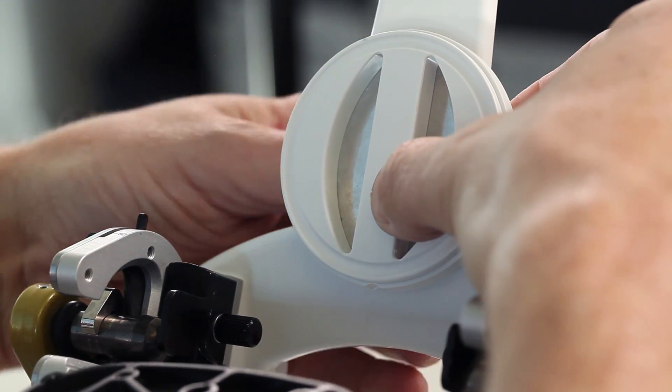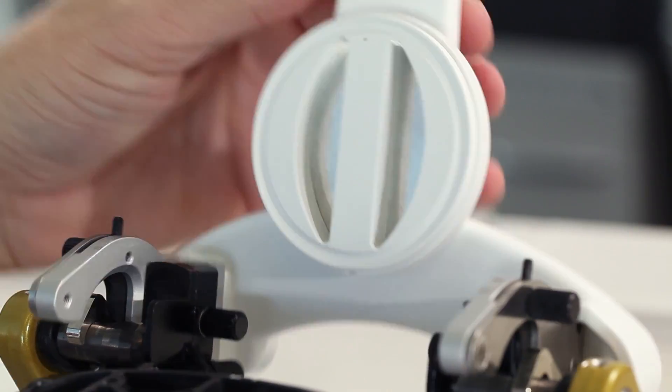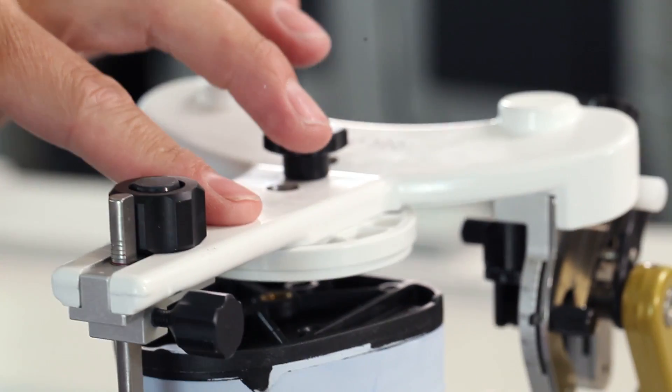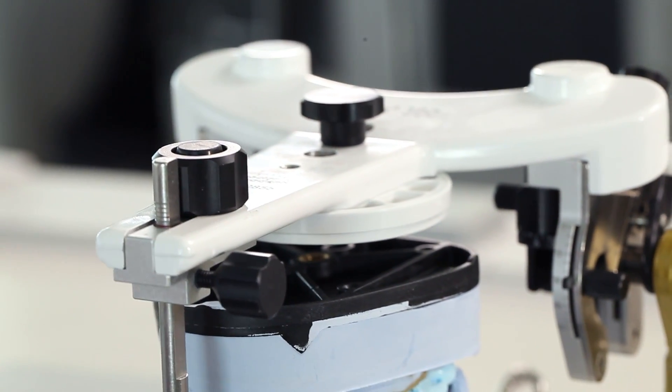Mount the maxillary model in this position using the magnetic base block. Articulation is done in the conventional manner with or without a split cast system.